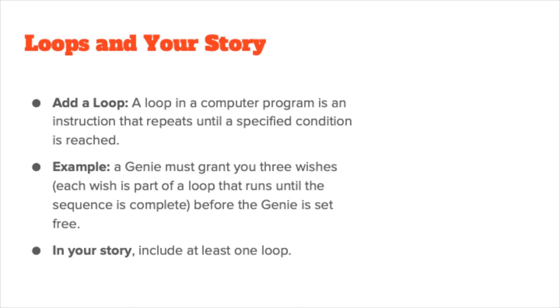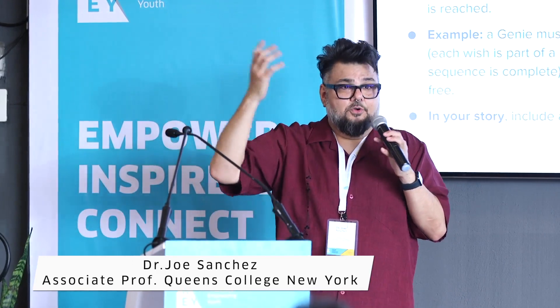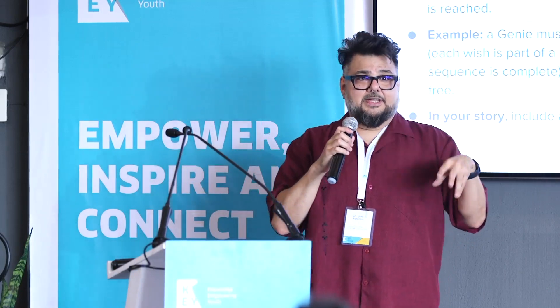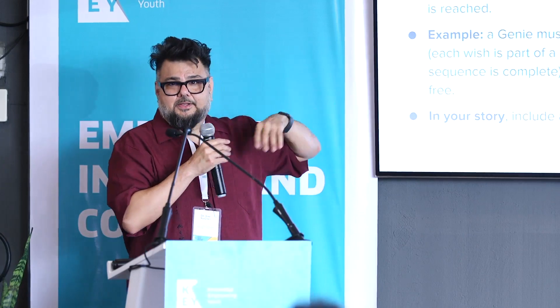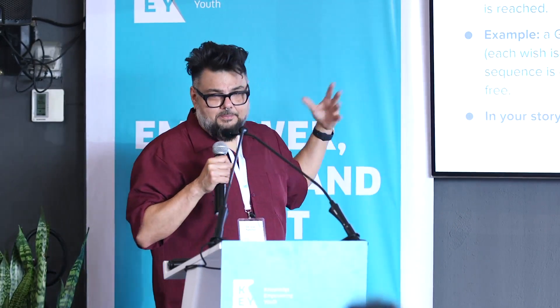Another computer science concept is loops — an instruction that must repeat and repeat until something specified happens. The genie-in-a-lamp is a loop: you must rub it three times for the genie to come out and grant three wishes; after the third wish, the genie is freed. In The Wizard of Oz, the hero must click her heels three times for something to happen. In our stories we need to include at least one loop — something that must happen multiple times for the story to progress.